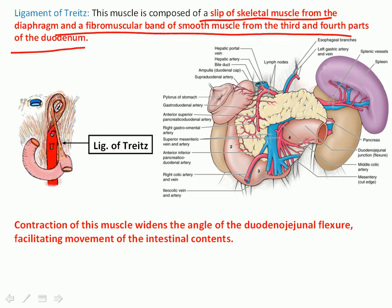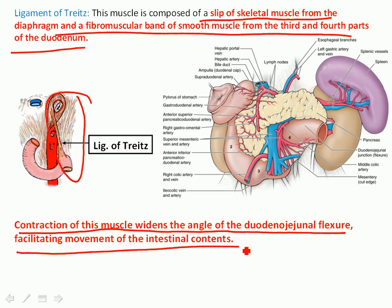The ligament of Treitz, also called the suspensory muscle of the duodenum, consists of a slip of skeletal muscle from the diaphragm and a fibromuscular band of smooth muscle from the third and fourth parts of the duodenum. Contraction of this muscle, occurring with diaphragm contraction, widens the angle of the duodenojejunal flexure, facilitating movement of intestinal content.